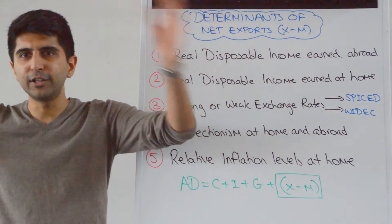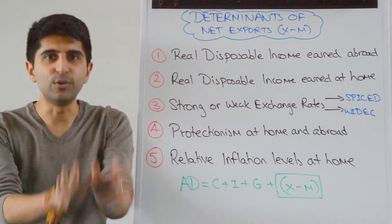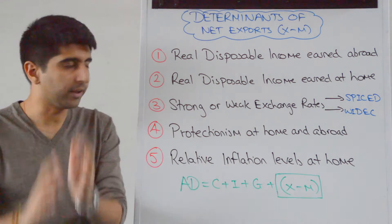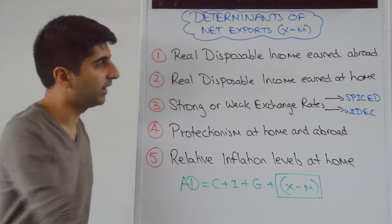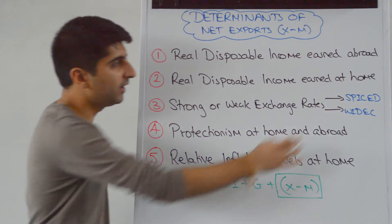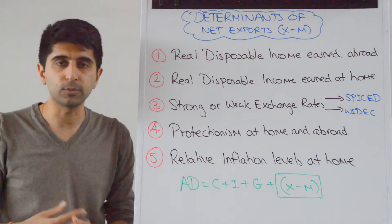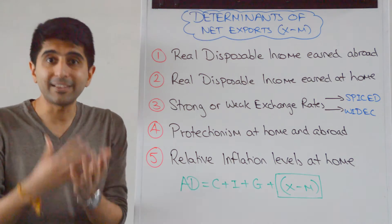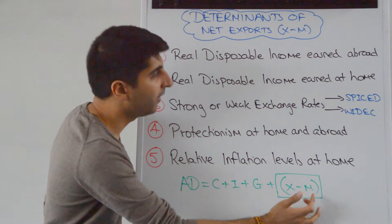Don't overcomplicate things — those two mnemonic devices are going to help you like crazy. So you have a strong exchange rate, it means imports are cheap and exports are dear. If imports are cheap, demand for imports will rise and expenditure on imports will rise. That will increase the value of M.